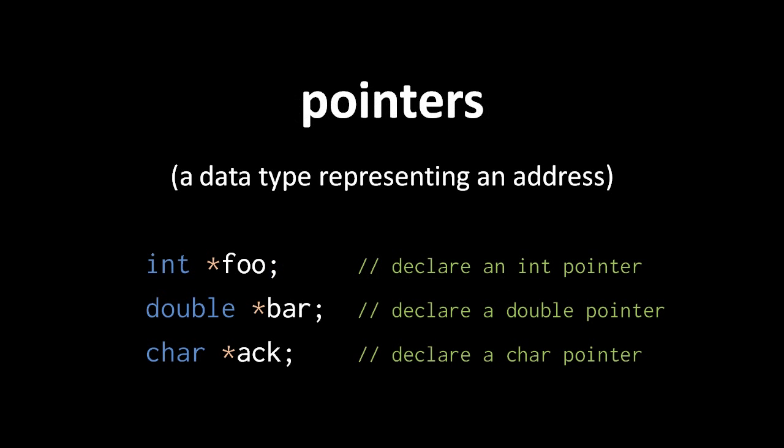C does, however, have a near-functional equivalent of reference variables in the form of pointers. A pointer is a data type that represents an address, and so effectively can reference a value elsewhere in memory.